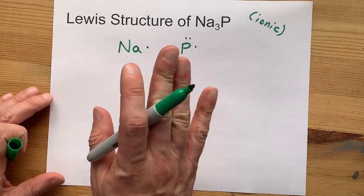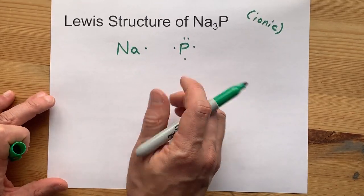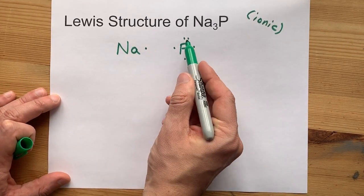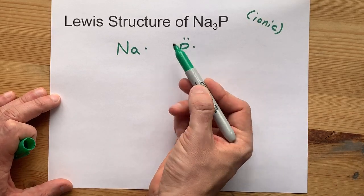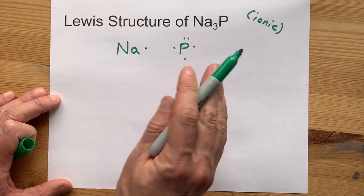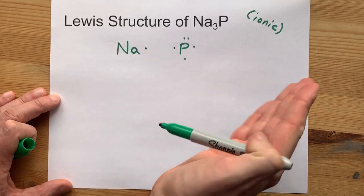Now non-metals satisfy the octet rule. They want a full outer shell of 8 electrons. Phosphorus here only has 5. It needs 3 more. Where is it going to get them from?